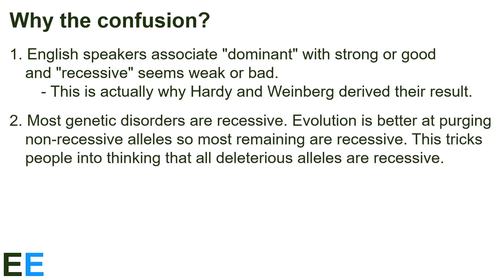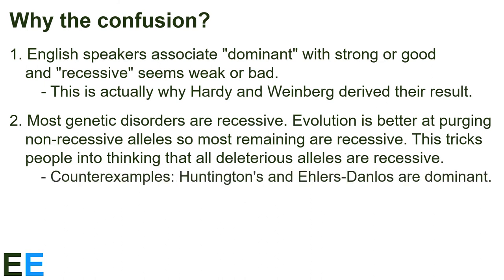Second, most of the deleterious genetic disorders we know about are recessive. Evolution is better at purging non-recessive alleles from populations, so most of the deleterious alleles that still remain — what we call genetic diseases — are recessive. This tricks people into thinking that all deleterious alleles are recessive, when really deleterious alleles can be dominant, recessive, or codominant, but the ones that last and get noticed are the recessive ones. There are counterexamples: Huntington's disease and the hypermobility form of Ehlers-Danlos disease are both dominant. These genetic diseases never skip generations, and most people who have the disease are heterozygotes because the deleterious alleles are fairly rare due to their detrimental effects.